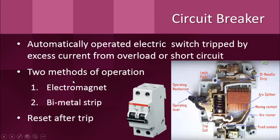Circuit breakers contain two different switching mechanisms: a bimetallic strip and an electromagnet. The bimetallic strip serves as a means of handling overcurrents. The bimetallic strip is shown in this picture — this is the cross-section of a breaker in which you can see the different components. We have an operating lever and an operating mechanism that contains a trip coil, also two contacts. This portion is the arc runner and arc splitter, and here is the bimetallic strip.